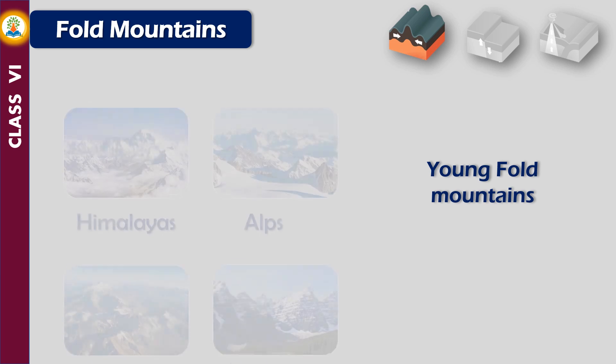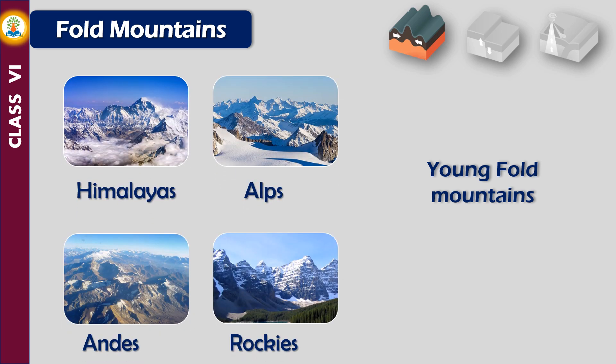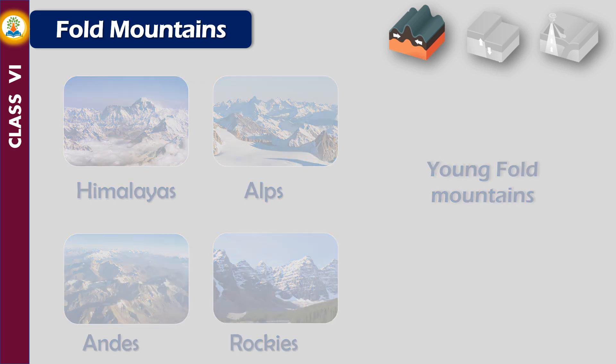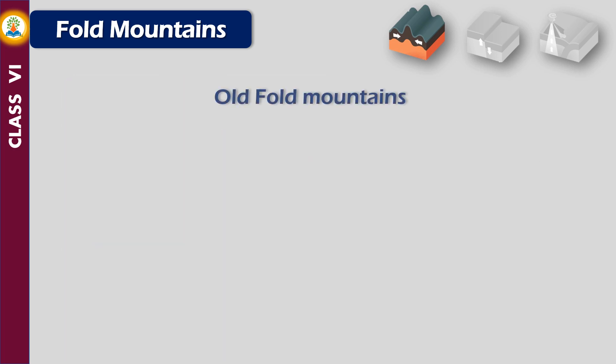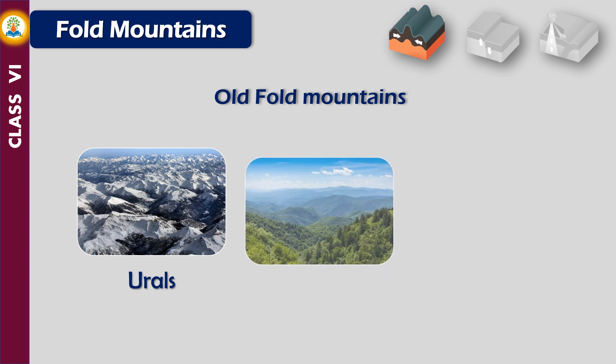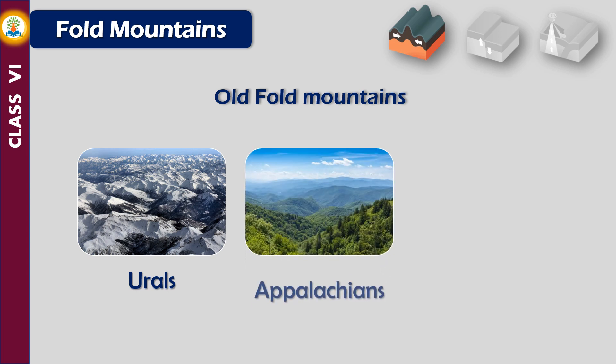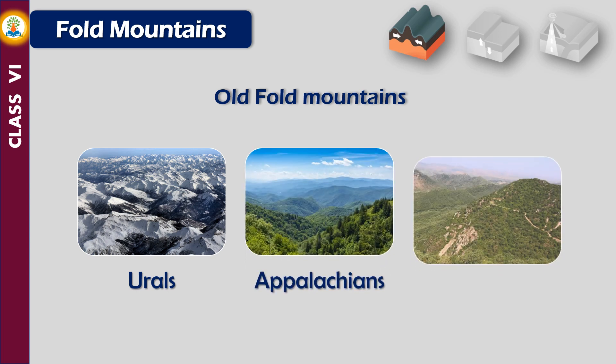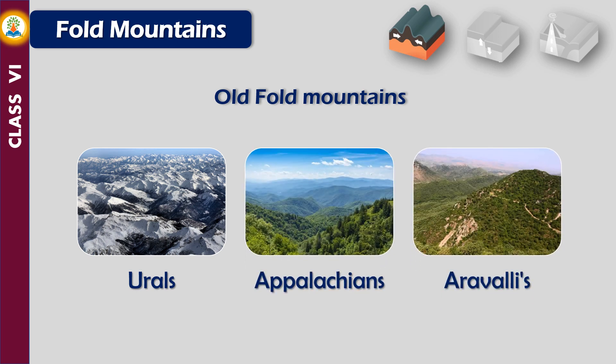The Himalayas, the Alps, the Andes, and the Rockies are all young fold mountains formed in recent geological ages — they are very high with steep slopes and sharp pointed peaks. Old fold mountains like the Urals, the Appalachians, and the Aravallis are low in height and have gentle slopes and rounded peaks.